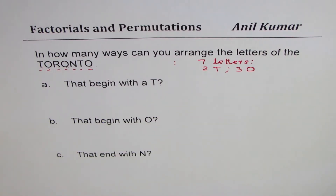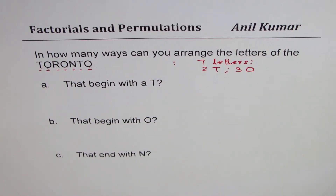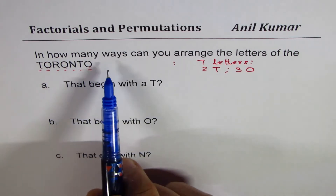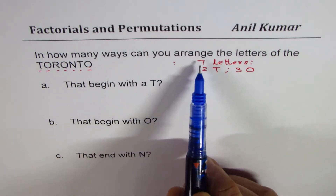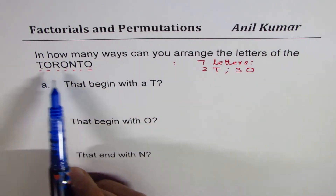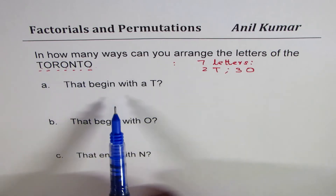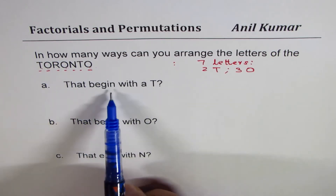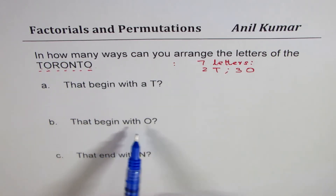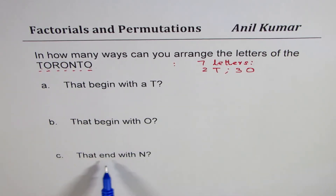I'm Anil Kumar and in this video we'll explore how to work with the letters of a word when few of them are repeated. The question here is: in how many ways can you arrange the letters of the word Toronto that begin with a T, that begin with O, or that end with N.